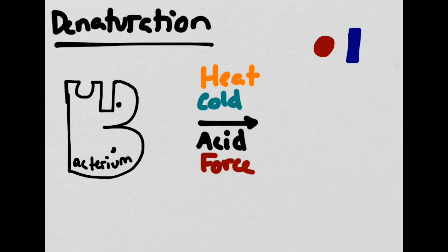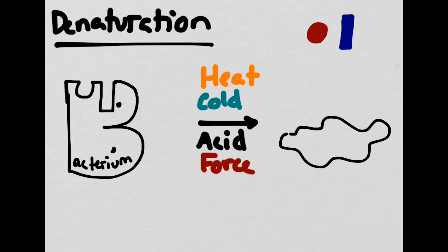Griffith hypothesized that the specific shape of a bacterium would allow it to do something very similar. Using its very specific shape, the bacterium would be able to bond to other substances inside the body. However, if you exposed it to heat, cold, acid, or force, the substrates would no longer be able to bind to the bacterium, and the bacterium would not be able to function normally.